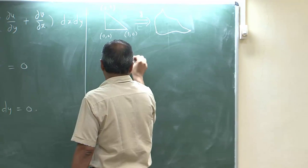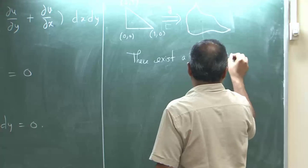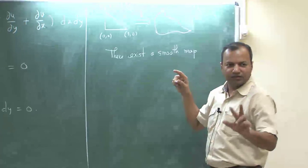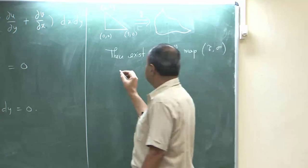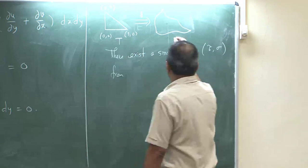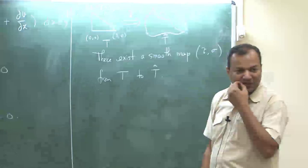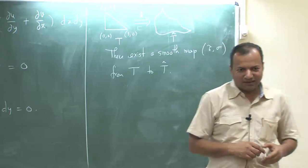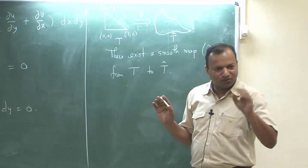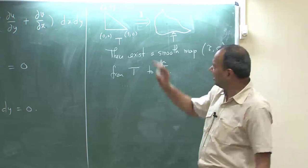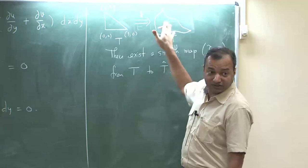There exists therefore a smooth map — let us call it (τ, σ) — from triangle T to T-hat. How do you prove this? You can formally prove this, but right now I will only appeal to your intuition. You can look at basic chapters of real analysis and prove this just by using differentiability and continuity of these regions.